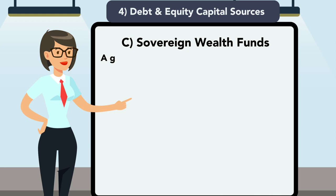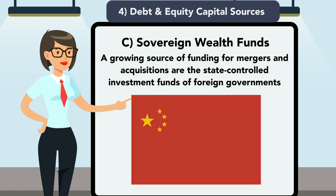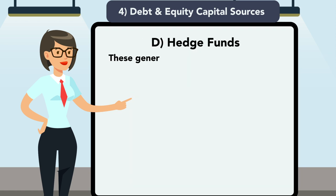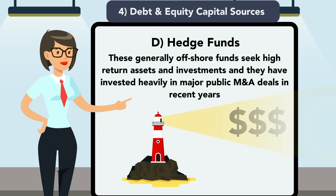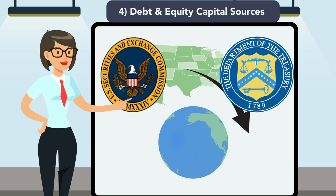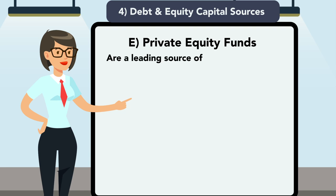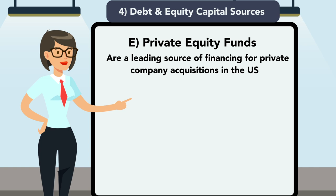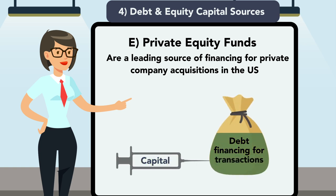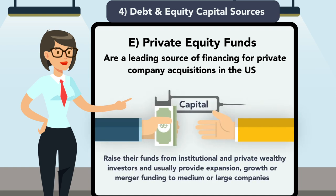C) sovereign wealth funds — a growing source of funding for mergers and acquisitions are the state-controlled investment funds of foreign governments, such as China. D) hedge funds — these generally offshore funds seek high-return assets and investments and have invested heavily in major public M&A deals in recent years. These are global funds usually operated outside of U.S. regulations to avoid Securities and Exchange Commission and Treasury Department oversight. E) private equity funds — a leading source of financing for private company acquisitions in the U.S. These funds inject equity capital and provide debt financing for transactions, raising their funds from institutional and private wealthy investors and usually providing expansion, growth, or merger funding to medium or large companies.